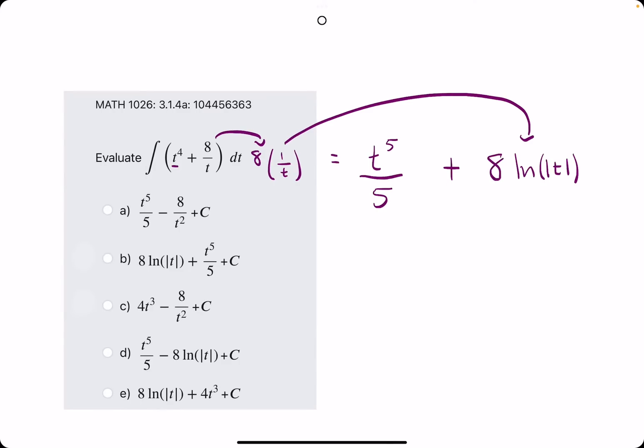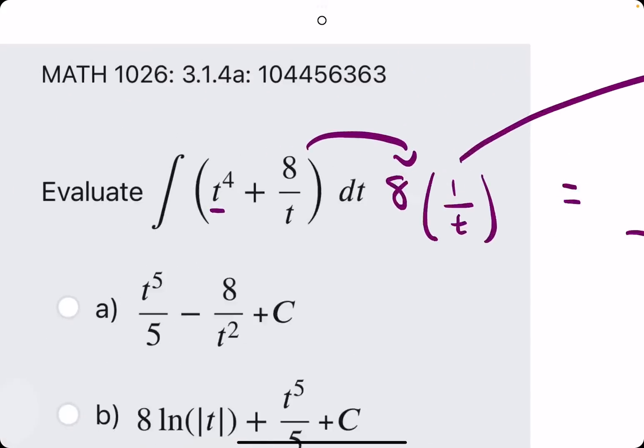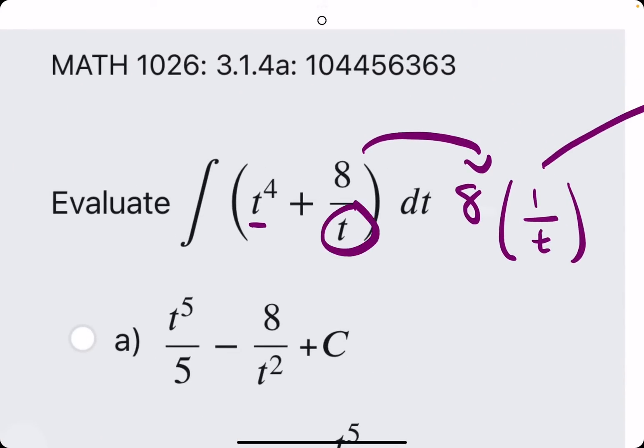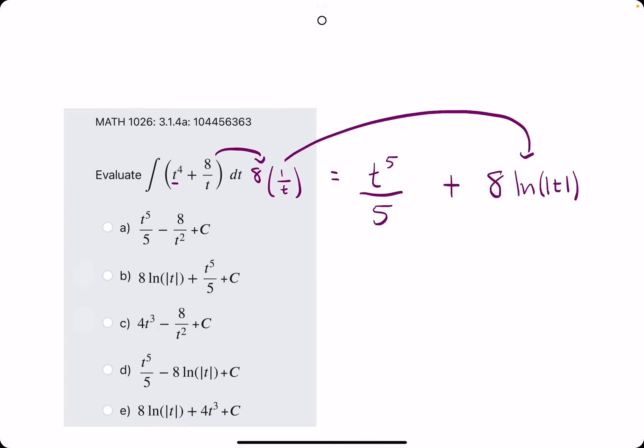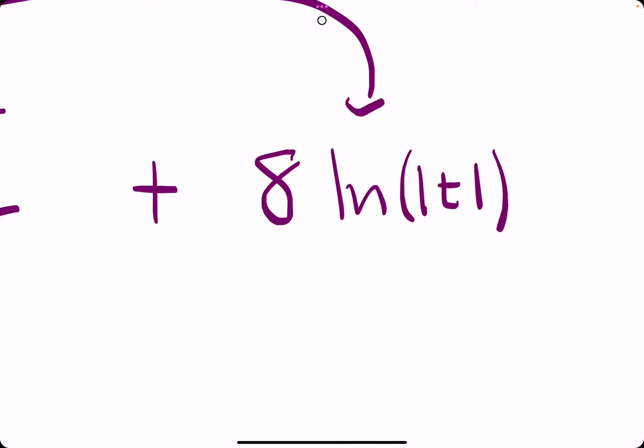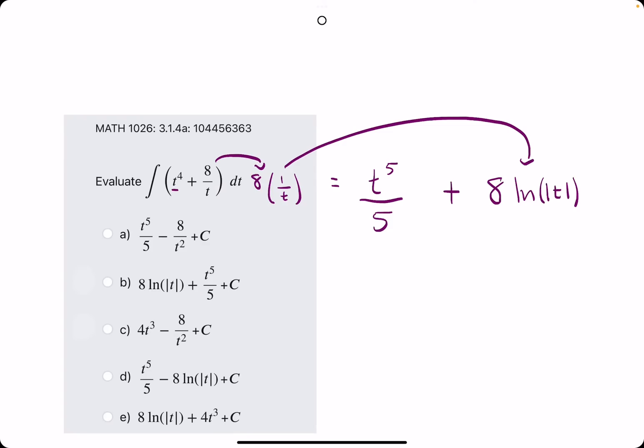And then the 8 will just float out in front. So the takeaway from this is if you see just a regular t in the denominator, the antiderivative will just be a natural log of the absolute value of that t.